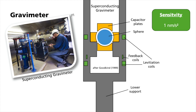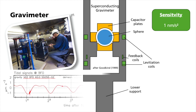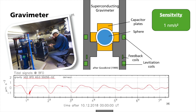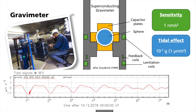Such an instrument is in operation at the Black Forest Observatory. Here, you can see the observed gravity signal for a duration of one week. Clearly, you see the roughly 24-hour and 12-hour periods of the signal. The time-varying component of gravity at mid-latitudes is around 1 µm per second squared, and thus only about 10 to the power of minus 7 of the static gravity.